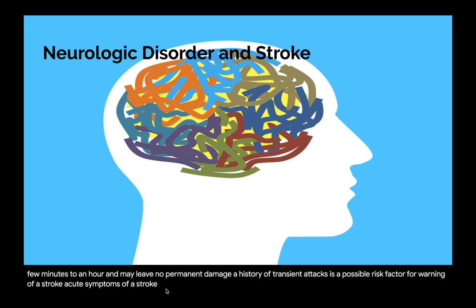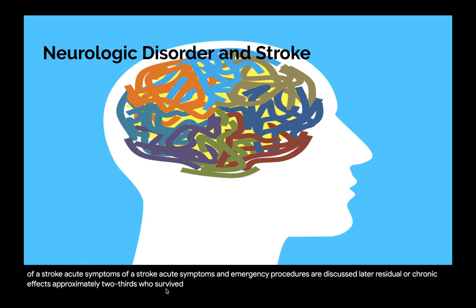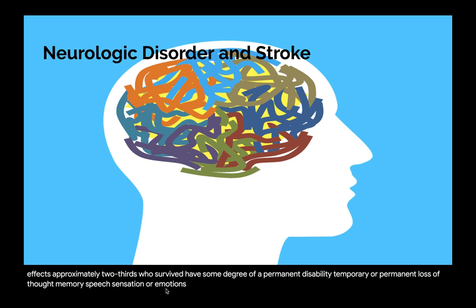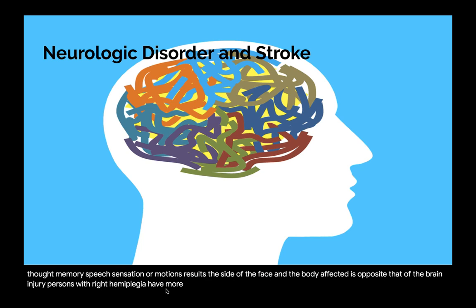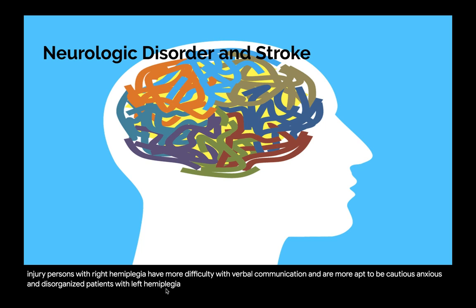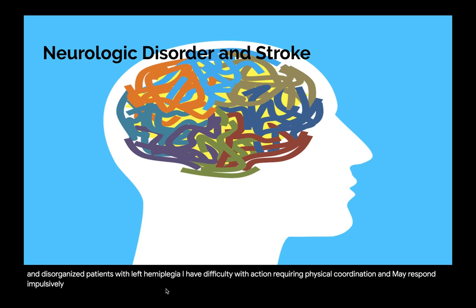Approximately two-thirds of those who survive a stroke have some degree of permanent disability. Temporary or permanent loss of thought, memory, speech, sensation, or emotions results. The side of the face and body affected is opposite that of the brain injury. Persons with right hemiplegia have more difficulty with verbal communication and are more apt to be cautious, anxious, and disorganized. Patients with left hemiplegia have difficulty with actions requiring physical coordination and may respond impulsively with overconfidence.